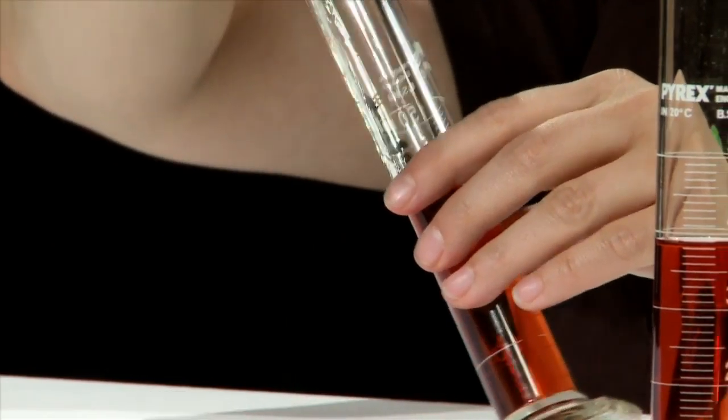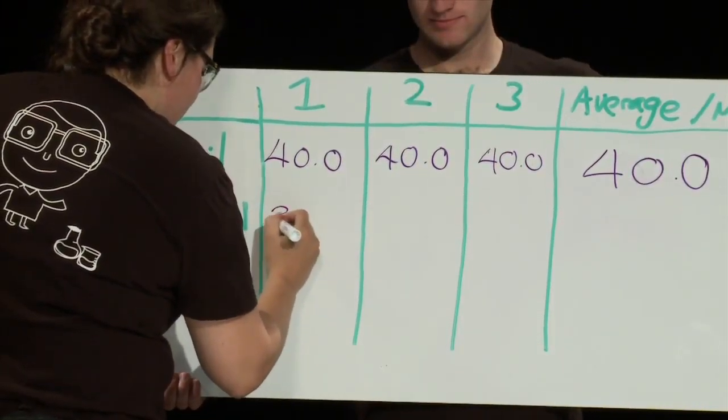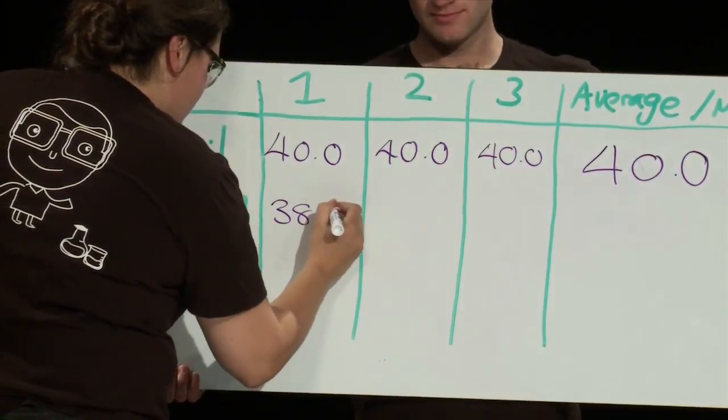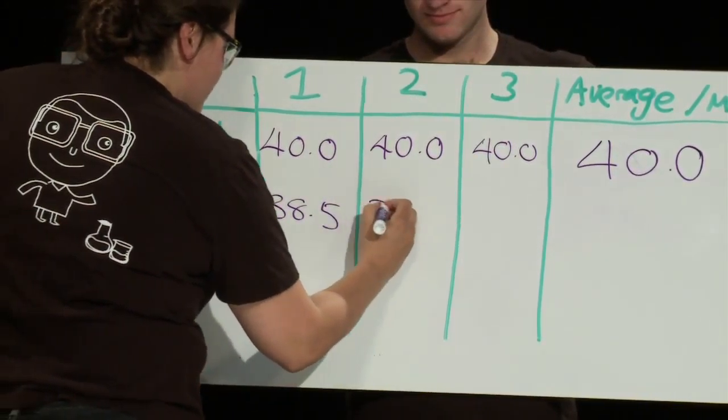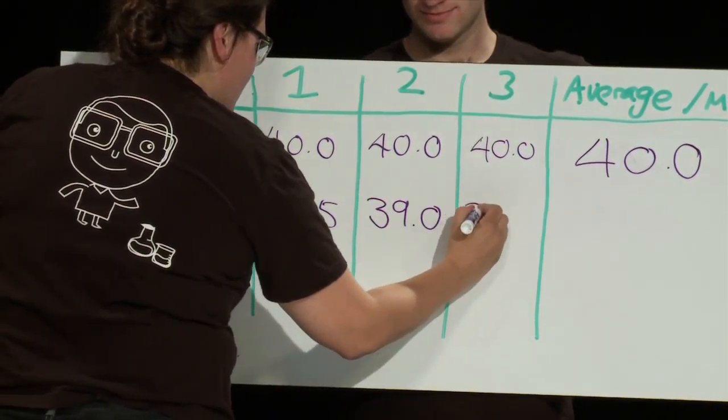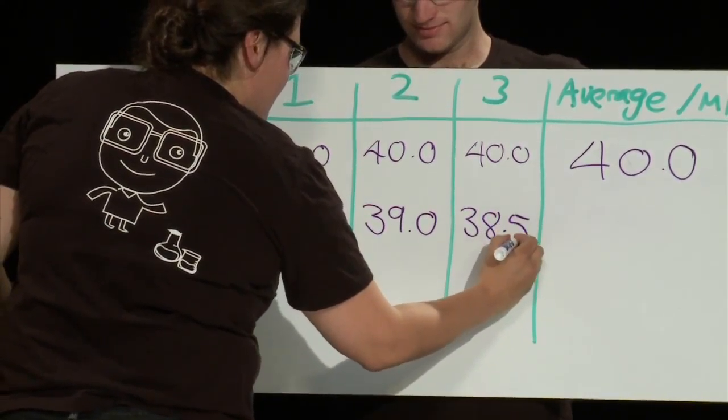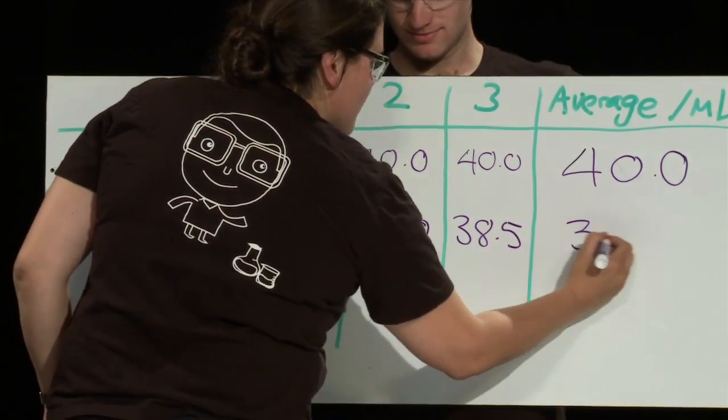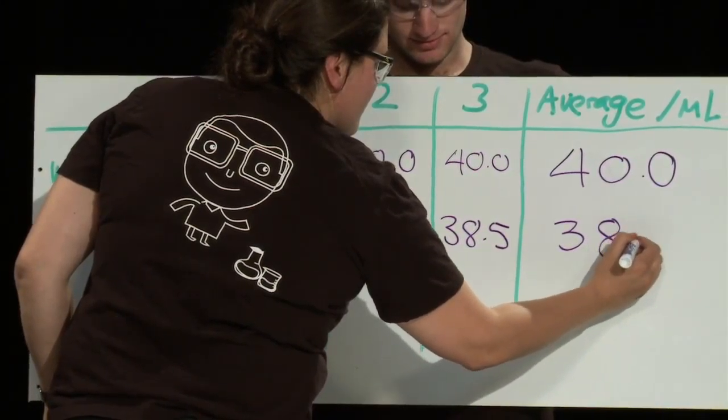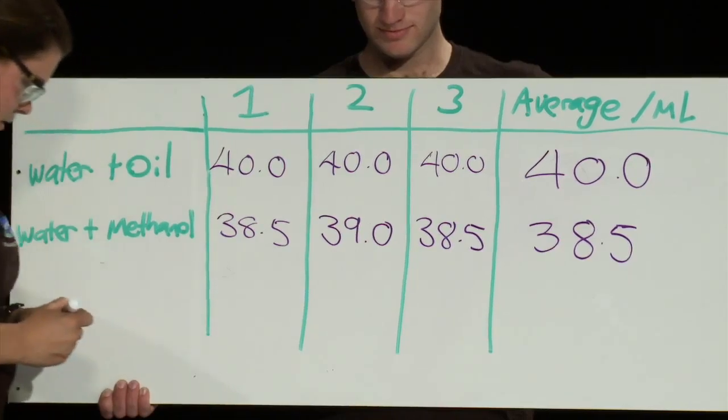Let's take a look at those results on the whiteboard. So as you can see the first result is 38.5. Now what could be going on here? As you can see our average is definitely below 40.